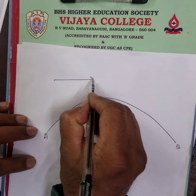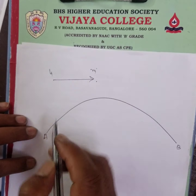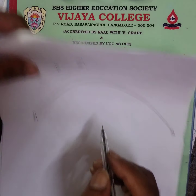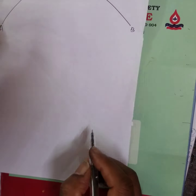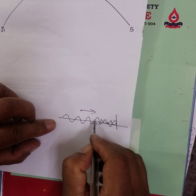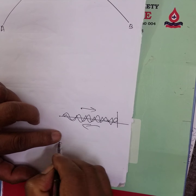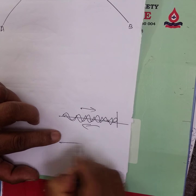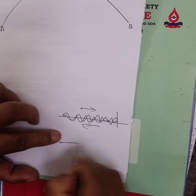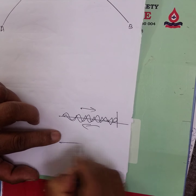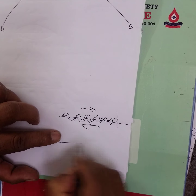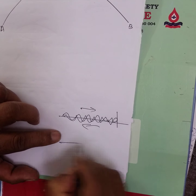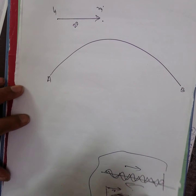My aim is to calculate the speed — the velocity of the transverse wave. Consider a part of the string, A to B, with a wave travelling from left to right with velocity V.